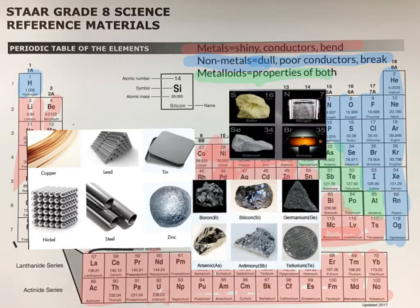Finally, we have our nonmetals, which are generally dull, poor conductors, and break easily instead of bending. Sulfur, number 16, appears as a yellow solid. Nitrogen can be found as a gas. We have selenium, which is a solid, and then bromine, which can be a liquid or a gas.